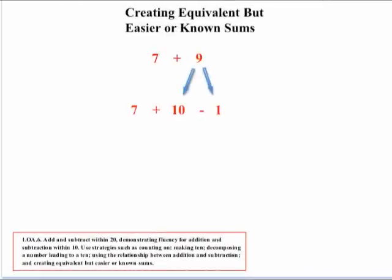Another example of creating equivalent but easier known sums: if kids have trouble adding 9, they can think of it as adding 10 and subtracting 1. By breaking down the 9 to 10 minus 1, it becomes easier — 7 plus 10 is 17, and then 17 minus 1 is 16. The key goal is adding and subtracting within 20, but it takes time for kids to become fluent, so there are several different suggested strategies they can use.